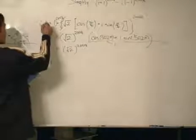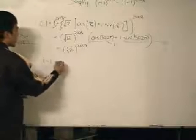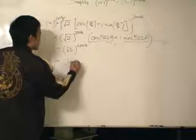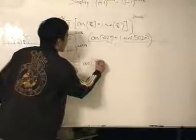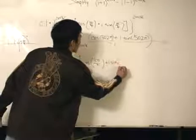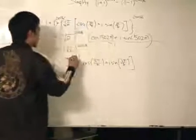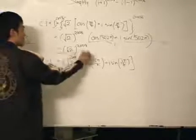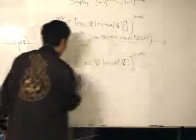So since we know that i plus 1 to the power of 2008 is this, let's just do i minus 1. Root 2, and it's cosine 3 pi over 4 plus i sine 3 pi over 4, all to the power of 2008. Same as this one over here, which is why I left it, so this is to the power of 2008.